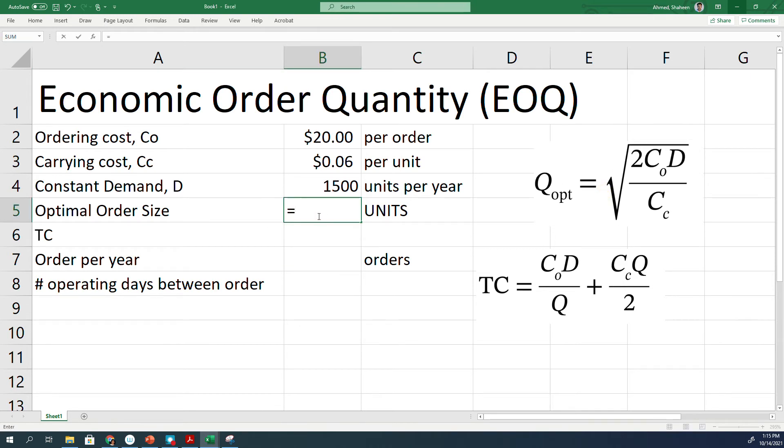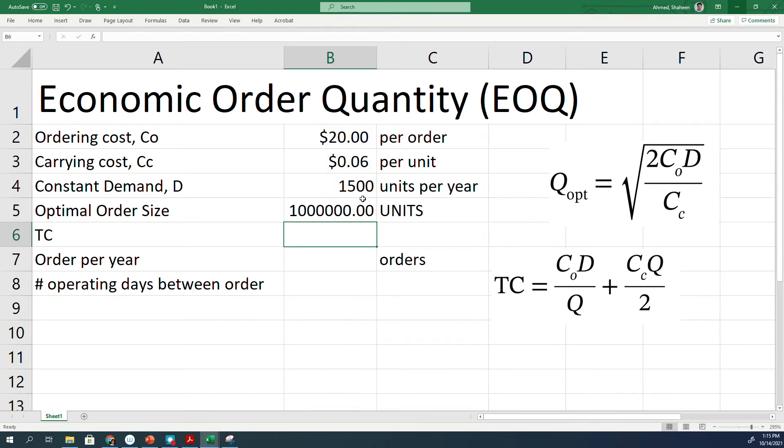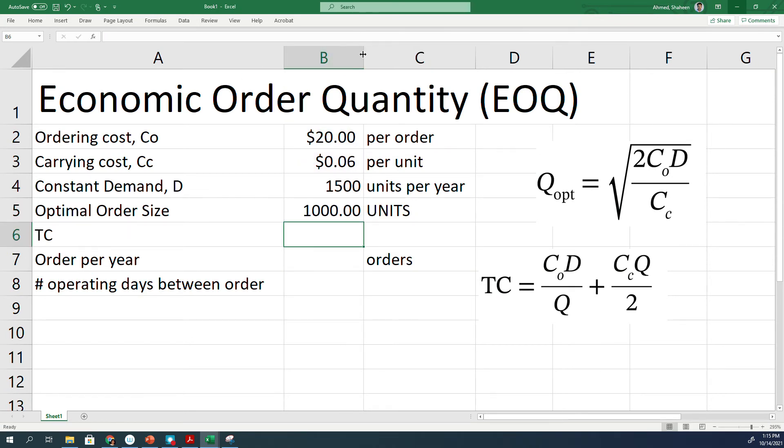So you'll say this is basically square root of 2 times C0 times the demand divided by the holding cost per unit. Didn't square root it. Produces a few hundred thousand, while we only need fifteen hundred. So now this is correct. So we need about a thousand units. That is the optimum order size under this situation.